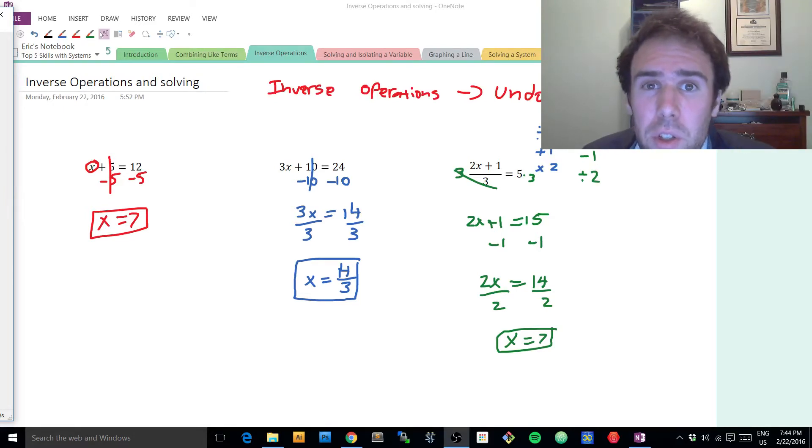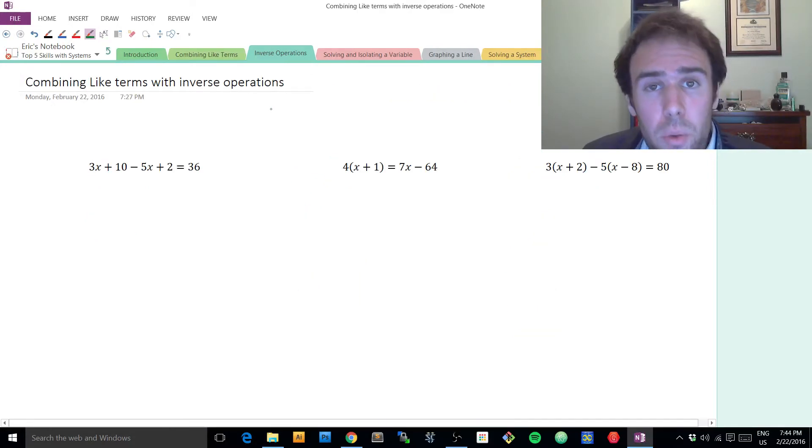Now what we're going to do next to wrap this up is we're going to work with combining like terms and inverse operations at the same time. Remember that we always want to try to combine like terms. Sometimes our problems amass and we can simplify it by reducing the number of things that we need to think about. So let's go take a look at these questions where we're combining our like terms and then applying our inverse operations.